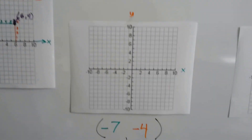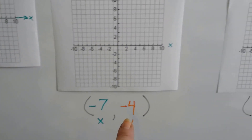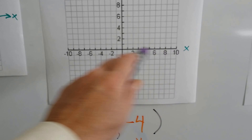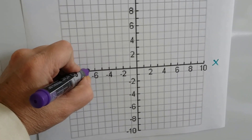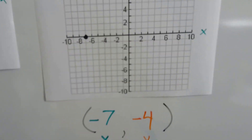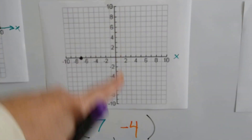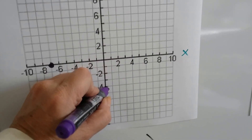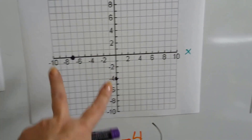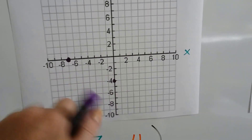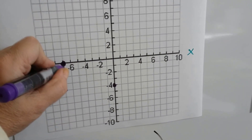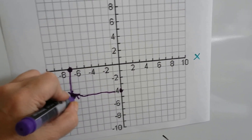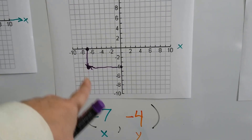Let's look at this one. We have a negative 7 and a negative 4. Let's find negative 7 on the x line — we know it's going to be on the left side because it's negative. Negative 7 would be right here. Where's negative 4 on the y line? Down here are the negatives, so negative 4 would be way down here. Where do those two points meet? They come together and meet right here — that is negative 7, negative 4.